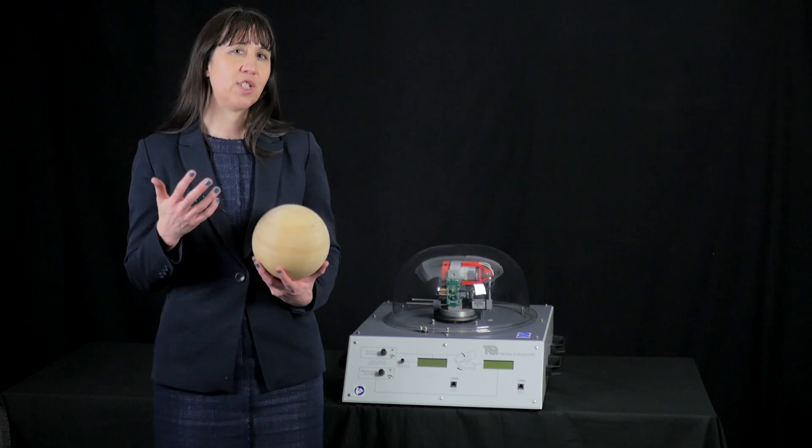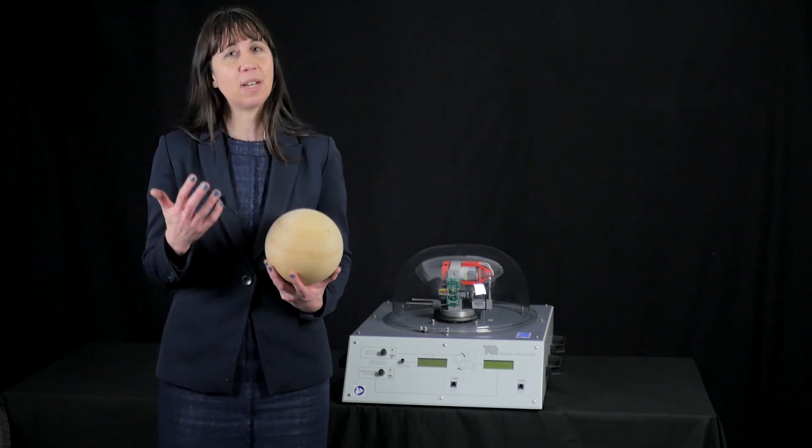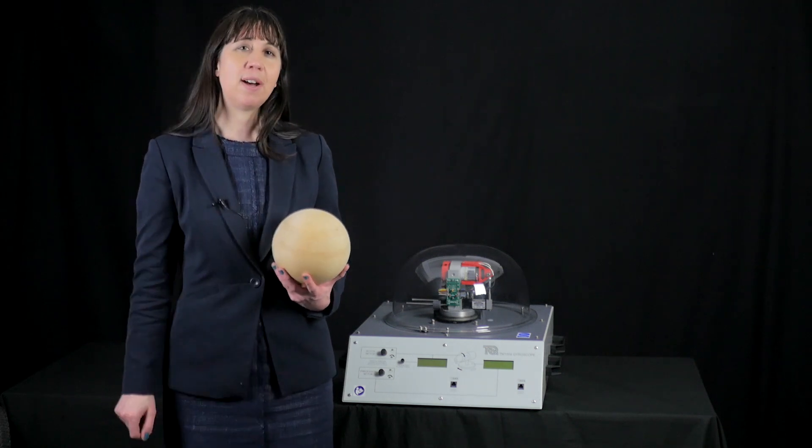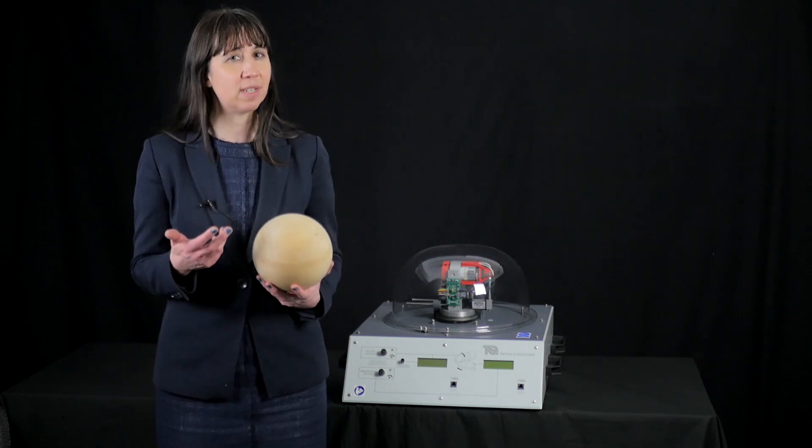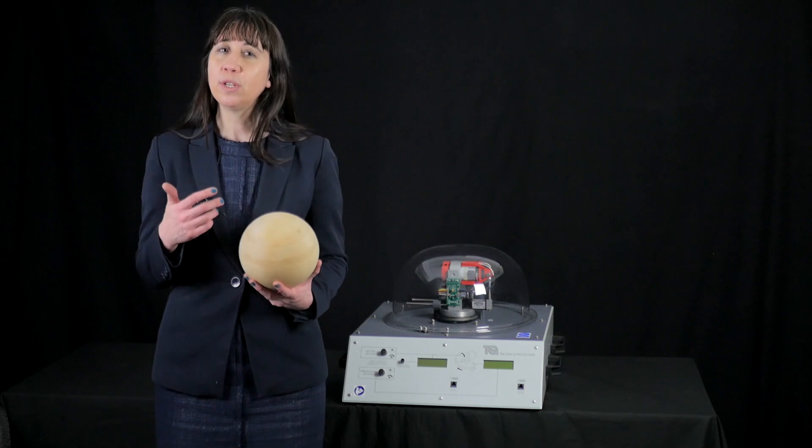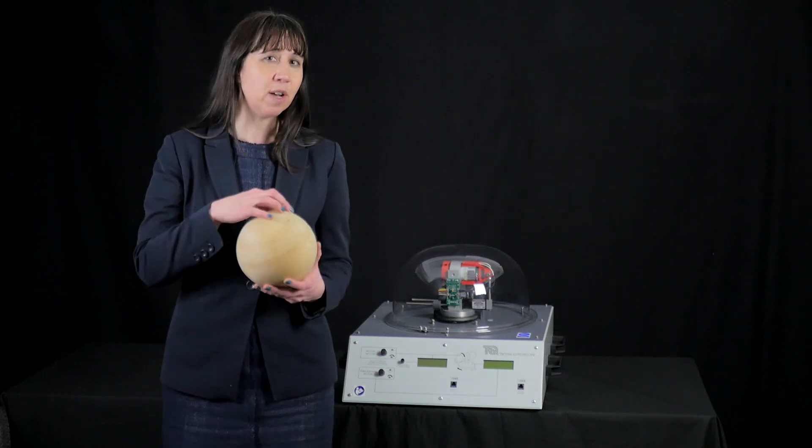The importance and usefulness of gyroscopes was not fully understood by scientists and engineers until around the 19th century, when its first practical use was by French physicist Leon Foucault, who used one to demonstrate the movement of the Earth.